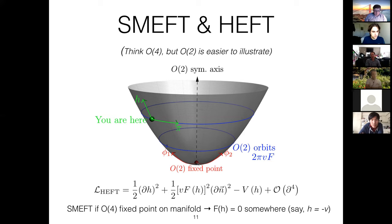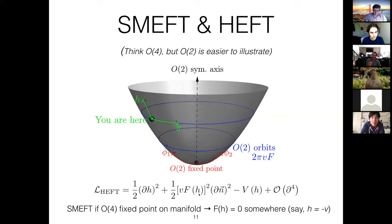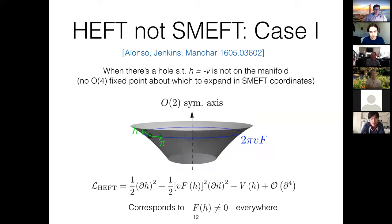The criteria is fairly clear: if you want to have an EFT and write it as SMEFT, then your scalar field manifold should contain the O(4) fixed point. For a HEFT parametrization, that means somewhere in your field space the function F should be equal to zero. If there's a point where that's the case, the S³ radius goes to zero and you're at the fixed point. Alonso, Jenkins, and Manohar came up with a simple criteria: a theory can only be written as SMEFT — i.e., it's HEFT-but-not-SMEFT — if there's a 'hole' in the scalar field manifold such that the O(4) fixed point just isn't on the manifold.